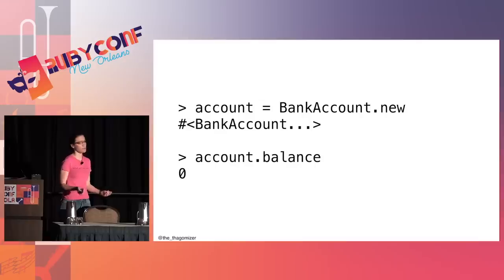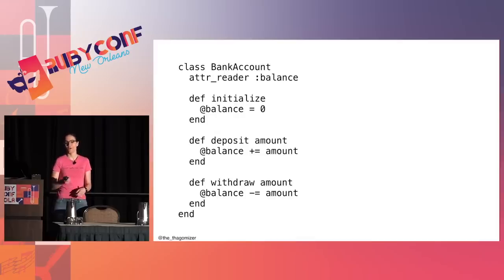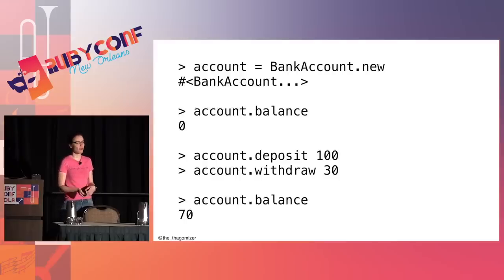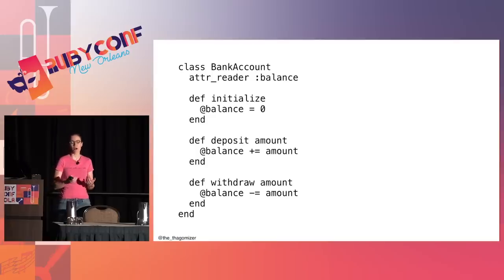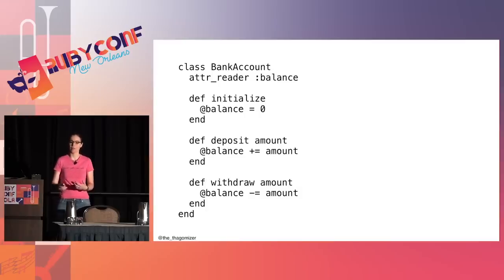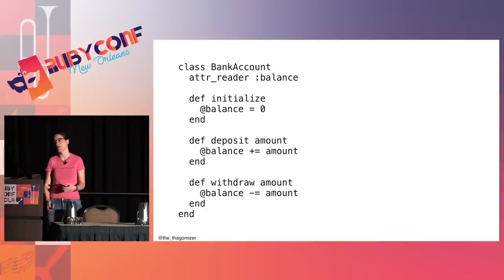A bank account with a balance of zero is pretty much useless, so I'm going to add ways to withdraw and deposit money. Deposit is a message that takes an amount and adds it to the balance. Withdraw is the opposite — it takes an amount and subtracts it from the balance. The data is the balance, and the methods — deposit, withdraw, and initialize — all modify the internal state of the object.